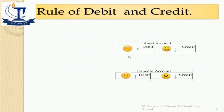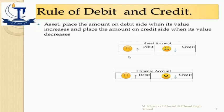Once again, as reinforcement of the rules of debit and credit: if assets are increasing, place the amount on the debit side. When expenses increase, place the amount on their debit side as well. If assets are decreasing, place the amount on the credit side; expenses are decreasing — place the amount on the credit side.